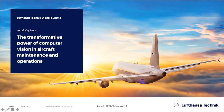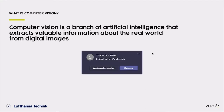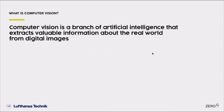The transformative power of computer vision in aircraft maintenance and operation. Before we get started on the different use cases, it's good to stop and briefly think about what computer vision actually is. This is a very dry description: computer vision is a branch of artificial intelligence that extracts valuable information about the real world from digital images.